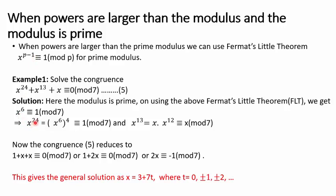The first term x²⁴ can be written as (x⁶)⁴. Since x⁶ ≡ 1, raising to the 4th power gives x²⁴ ≡ 1 (mod 7). The second term x¹³ can be written as x · x¹², and since x¹² ≡ 1, we get x¹³ ≡ x (mod 7). Our congruence then reduces to 1 + 2x ≡ 0 (mod 7).